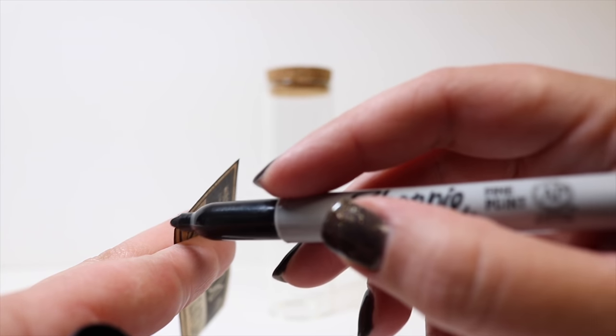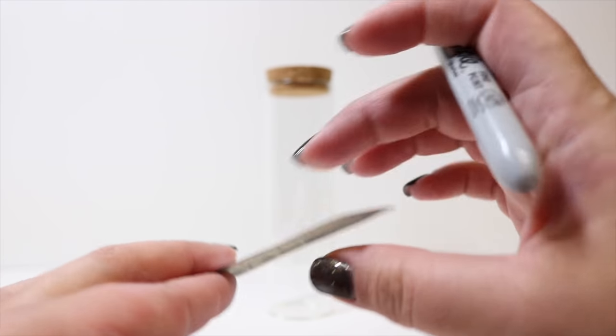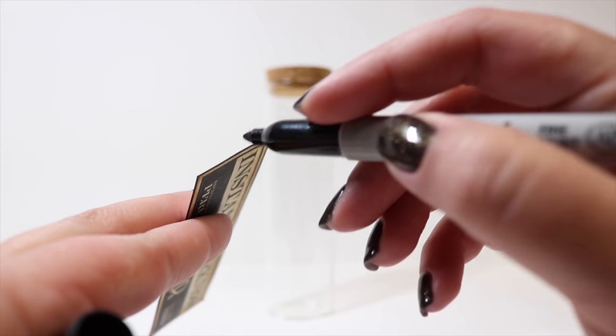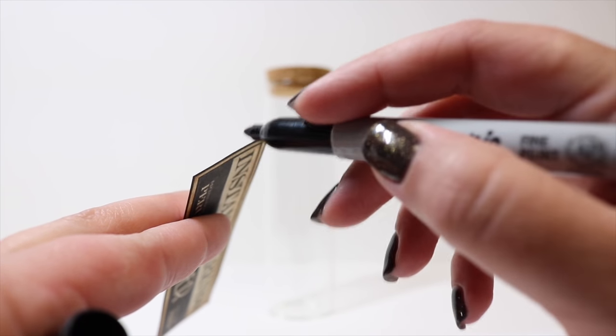And I do this on all of my labels. So if it's a brown, pink, purple, whatever it is, I just take the matching marker and go around the edge. Just so then that way you don't get that harsh white edge that you can sometimes get with the way these get cut out.